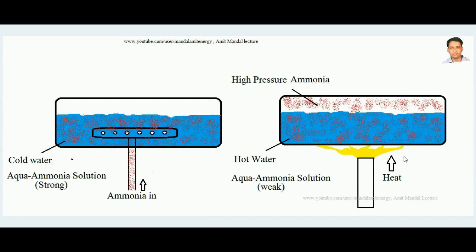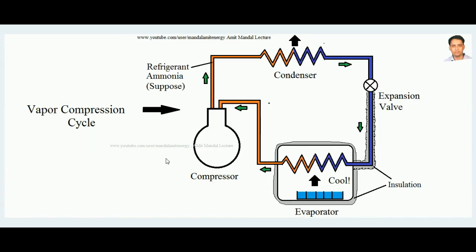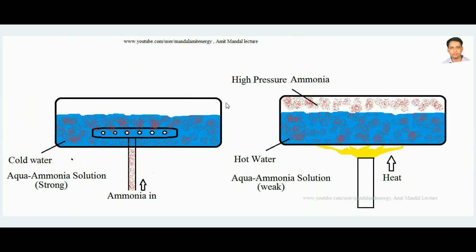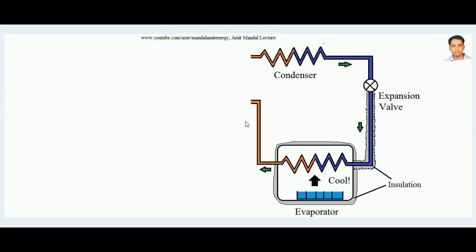When the aqua ammonia solution is heated by supplying heat, the ammonia is liberated from the cold water and collects over the top with high pressure. In vapor compression cycle, the compressor takes refrigerant at low suction pressure and delivers it at high pressure. In the vapor absorption system, this same effect is achieved: ammonia dissolves in cold water and, when heated in the generator, is liberated at high pressure.